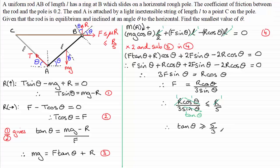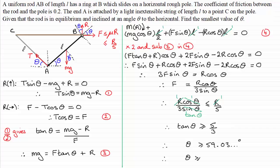Taking the inverse tan of 5 over 3 gives theta greater than or equal to 59.03 degrees. Rounding to one decimal place, theta is greater than or equal to 59.0 degrees.